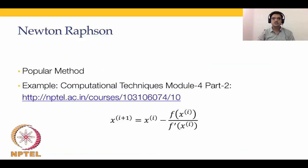So let's talk about Newton-Raphson. It's a popular method which was covered in module 4 part 2 of the computational techniques course, the link for which is given here. For each new guess, we start with an initial guess x0 and use the Newton-Raphson equation to obtain x1, then use x1 to obtain x2, and so on.